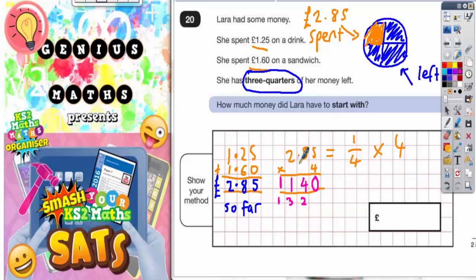So all we've got to do then is remember to put the decimal point in, which will be lined up with this decimal point here, and the pound sign. So the final answer is £11.40.